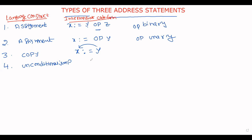The next statement is the unconditional jump statement. If you write the statement 'goto L', the control simply goes to the statement labeled L. Wherever any statement is labeled L, control automatically goes to that particular statement without checking any condition.